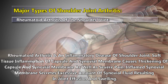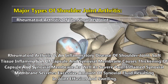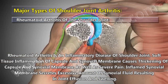Rheumatoid arthritis is an inflammatory disease of the shoulder joint. Soft tissue inflammation of the capsule and synovial membrane causes thickening of both structures as well as severe pain. The inflamed synovial membrane secretes excessive amounts of synovial fluid, resulting in joint effusion and swelling.